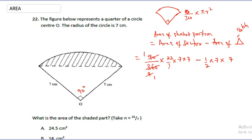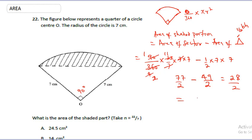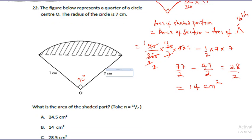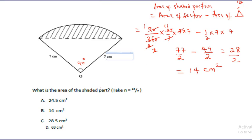Simplifying: 90 over 360 cancels to 1 over 4. Then 4 cancels with part of 22 over 7 to give 11 over 2 times 7, which is 77 over 2. Minus 49 over 2 for the triangle area. So 77 over 2 minus 49 over 2 equals 28 over 2, which gives us 14 cm squared.